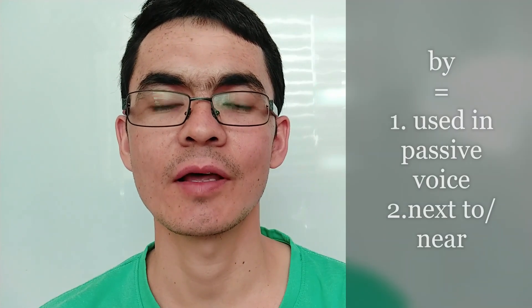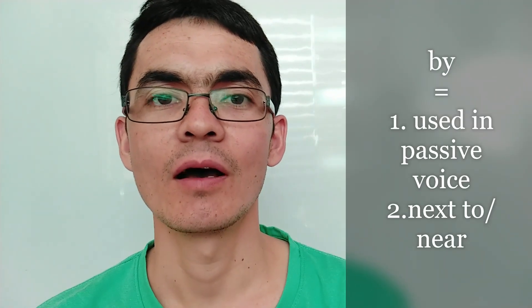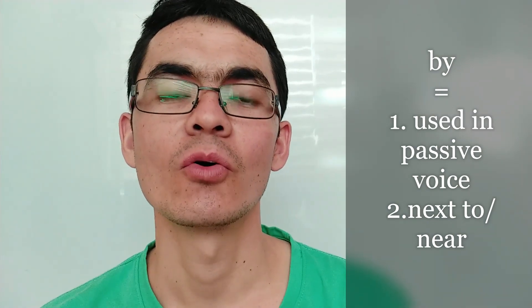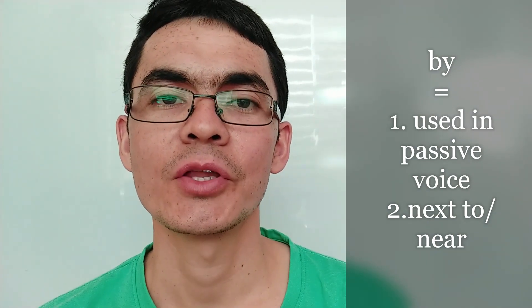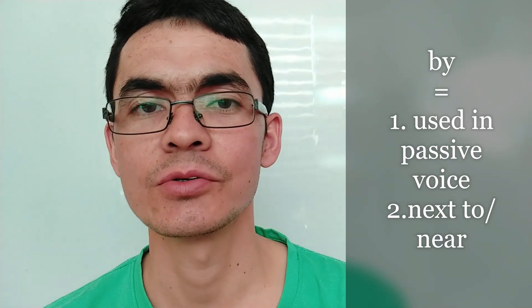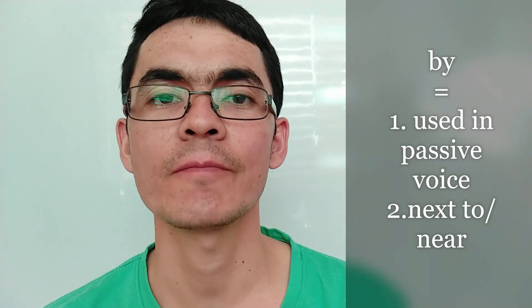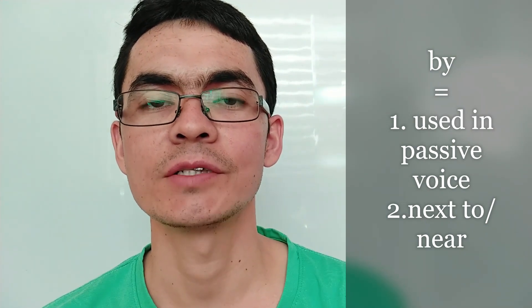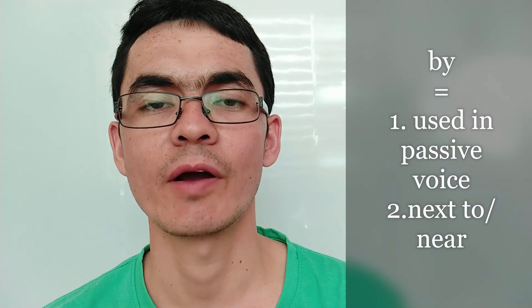The word 'by' is a preposition with lots of meanings. You can use it in the passive voice, like: this house was built by my grandma. Or you can use it to mean 'next to' or 'near,' for example: I saw the cat by the window, or there are lots of books by the window.